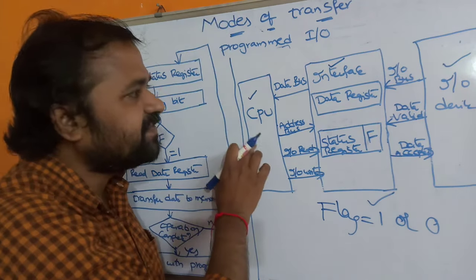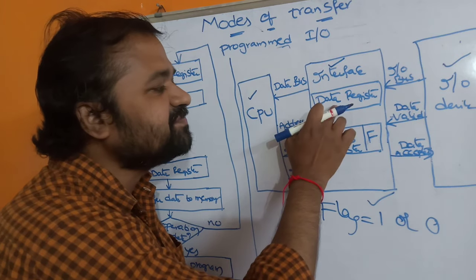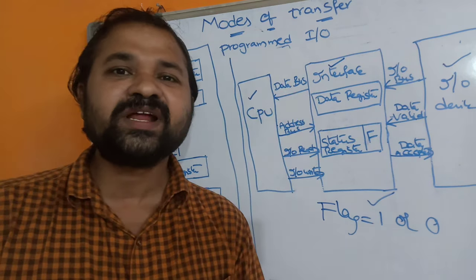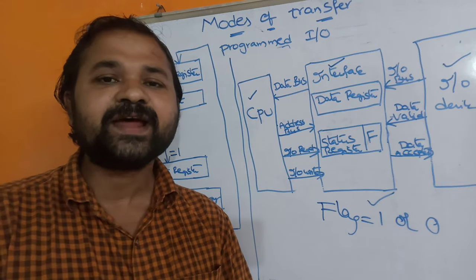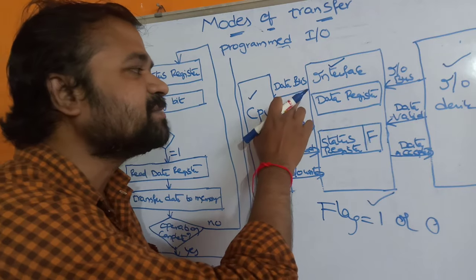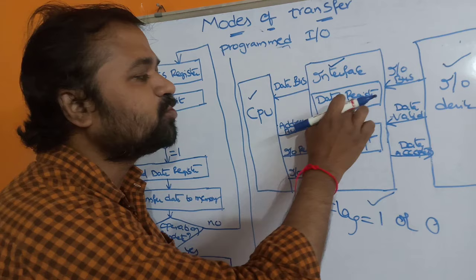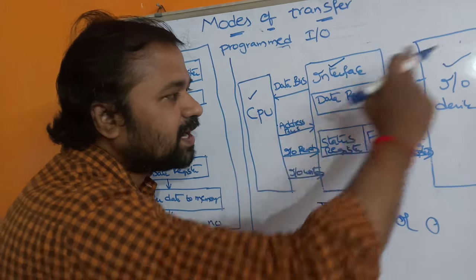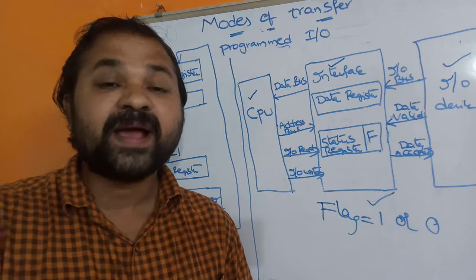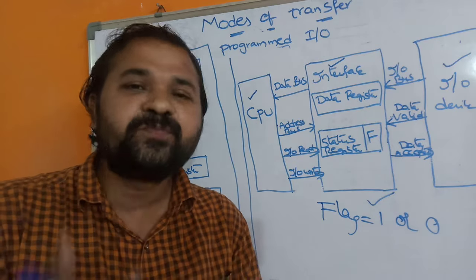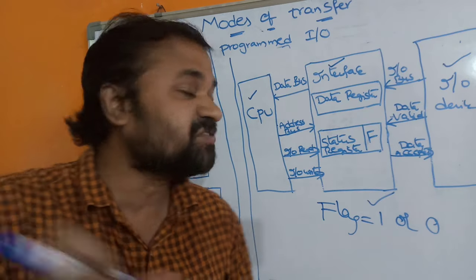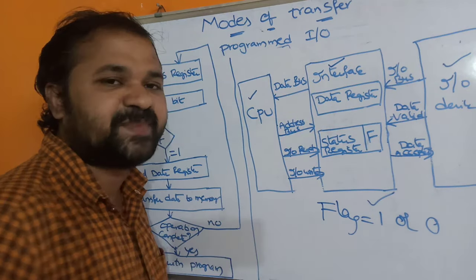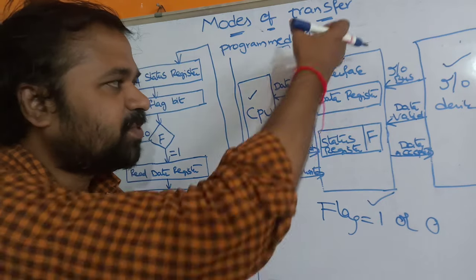Now let us see the connections between CPU and interface. The information which is present in the data register will be sent to the CPU with the help of the data bus. There are three types of buses: address bus, data bus, and control lines. The data bus is mainly useful in order to transfer data from the data register to the CPU. The CPU can access either an input or output device by specifying its address. Every input or output device contains some address, and that address is specified with the help of the address bus, so that it accesses the corresponding device through this interface.